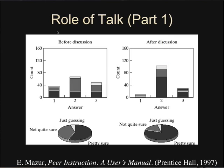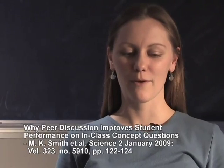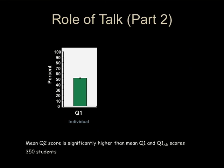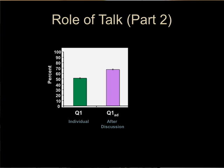As a follow-up to Mazur's work, Michelle Smith and colleagues at the University of Colorado did a study motivated by faculty concern that increases in correct responses after peer discussion merely result from students getting the correct answer from peers without actually learning. Students were asked two questions: they first answered question one individually, then responded again following peer discussion. Students were more likely to get the first question correct following peer discussion.